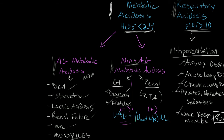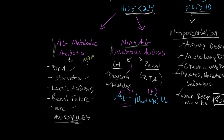Urine anion gap — calculated by urine sodium plus urine potassium minus urine chloride — can distinguish GI from renal causes if you can't determine it clinically. A negative urine anion gap is normal and is found in GI causes. A positive urine anion gap is found in renal causes. Finally, for anion gap metabolic acidosis, an anion gap greater than 10 is abnormal. Causes include DKA, starvation, lactic acidosis, renal failure, and others. The mnemonic MUDPILES is a good way to remember common causes of anion gap metabolic acidosis. I hope this has been a useful video and I'll see you in another video.